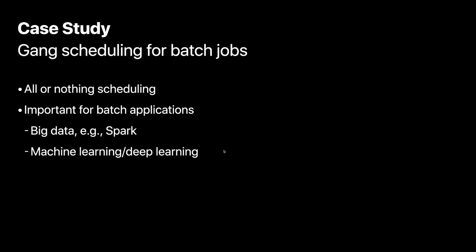Next, I'm going to discuss new scheduling features to support gang scheduling for batch jobs. Many batch jobs like big data workloads, Spark, machine learning, and deep learning require gang scheduling, which means given a group of pods, scheduling all of them or none of them. So far, because the existing native scheduler only supports pod-by-pod scheduling, it's missing these features.